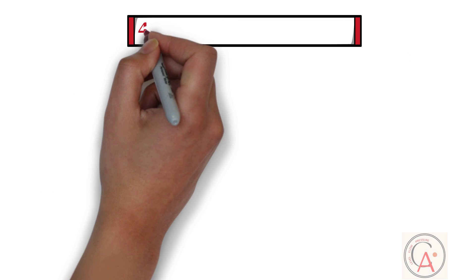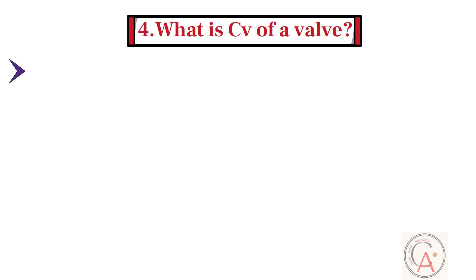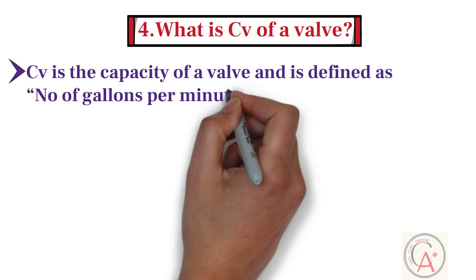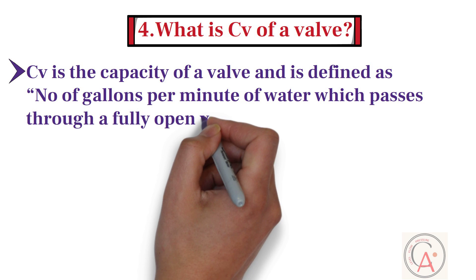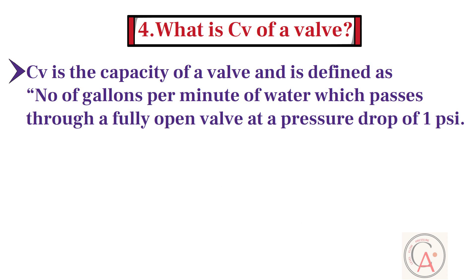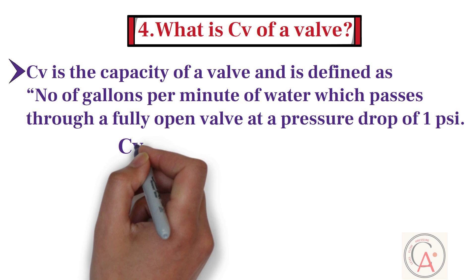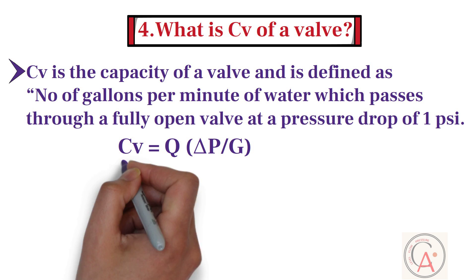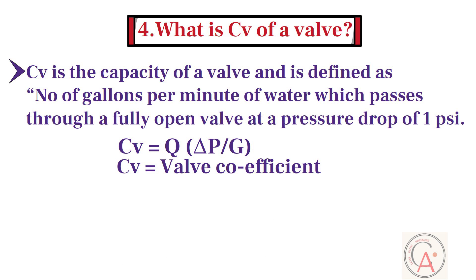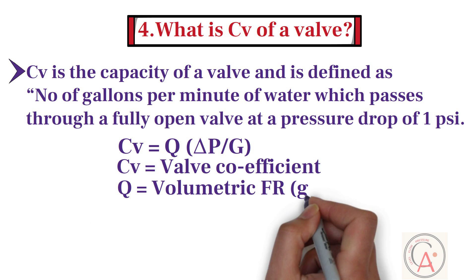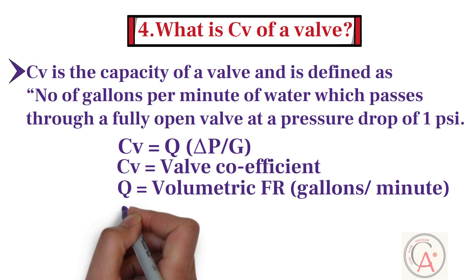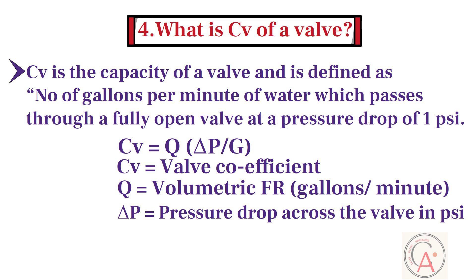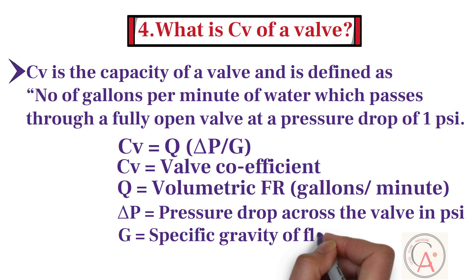Fourth question: what is the CV of a valve? CV is the capacity of a valve, defined as the number of gallons per minute of water which passes through a fully open valve at a pressure drop of one pound per square inch. In the CV equation: CV is the valve coefficient, Q is the volumetric flow rate, ΔP is the pressure drop across the valve in psi, and G is the specific gravity of the flowing fluid.